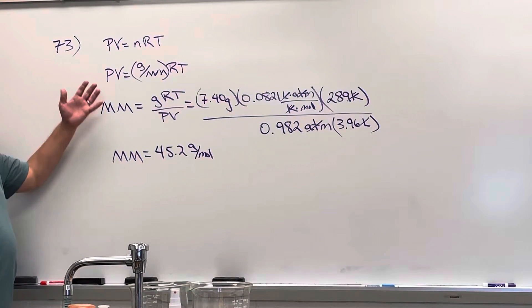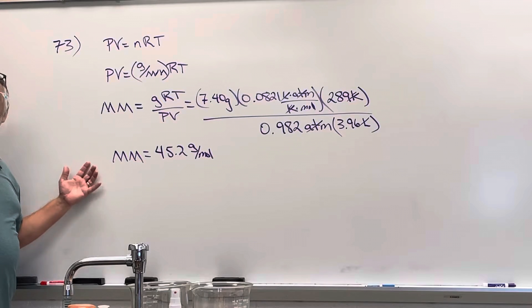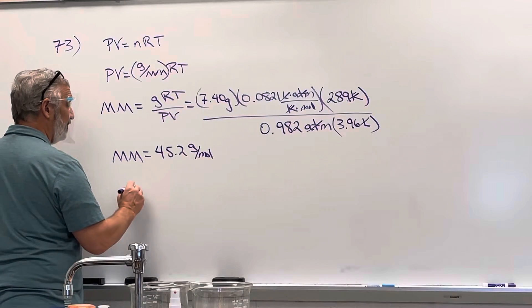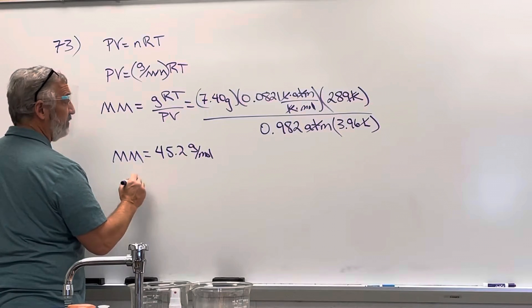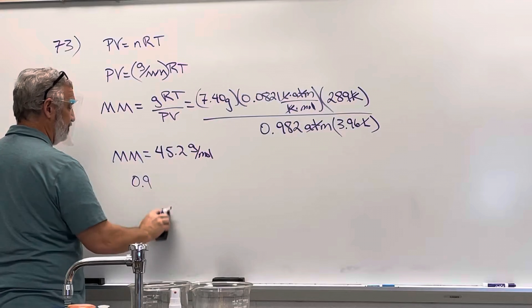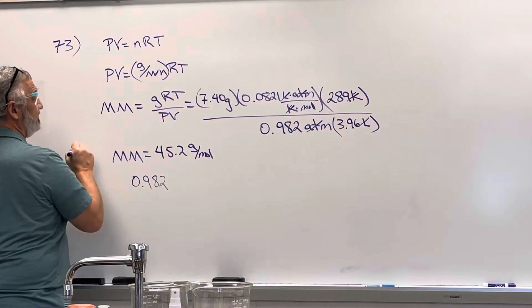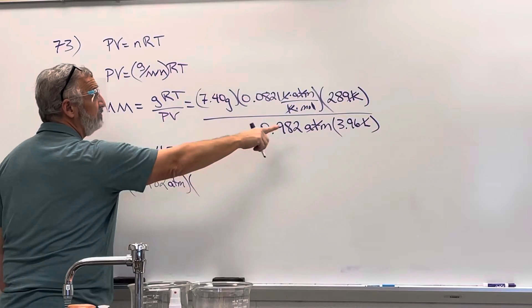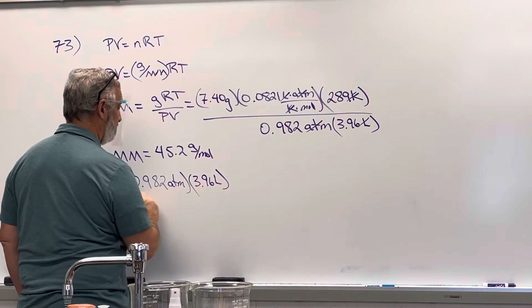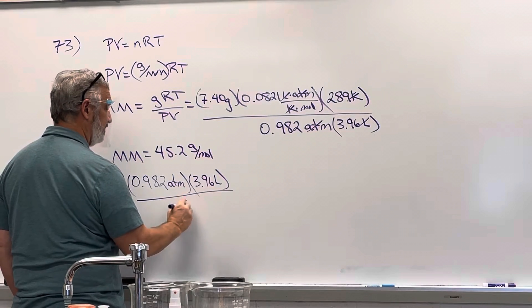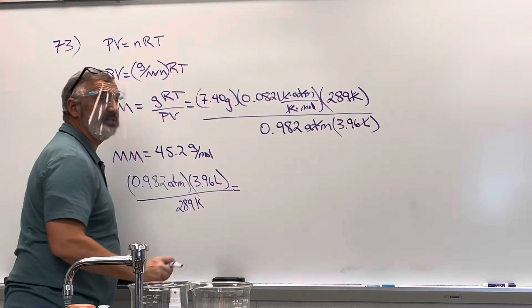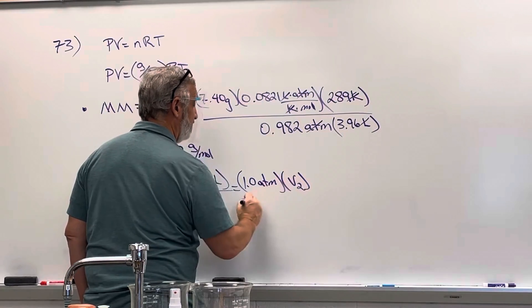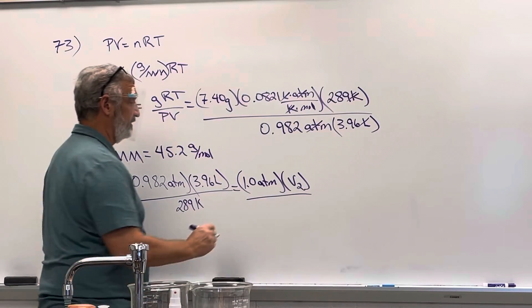Now I have one set of conditions and they're asking for the volume at a new set of conditions, STP. So what law do I use there? Use the combined gas law. P1, the initial pressure is 0.982 atmospheres, times initial volume of 3.96 liters, P1V1 over T1, initial temperature of 289 K is equal to our new pressure, one atmosphere. We're looking for the new volume V2 and the standard temperature is 273.